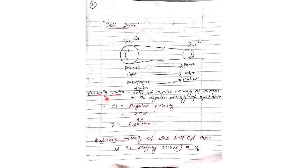A term known as velocity ratio is defined as the ratio of the angular velocity of the output drive to the angular velocity of the input drive, that is ω2 by ω1. The angular velocity formula is ω equals 2πN by 60. Also, radius and diameter are related by r equals d by 2.